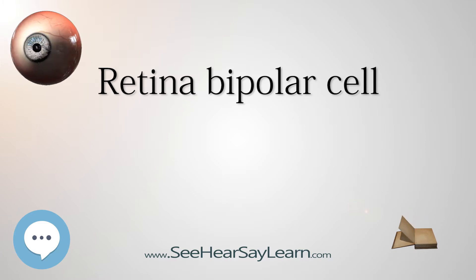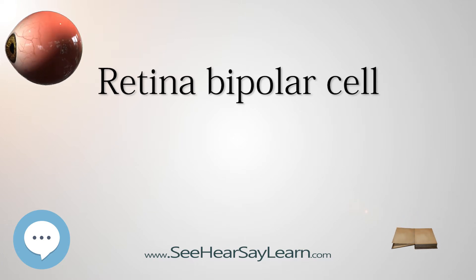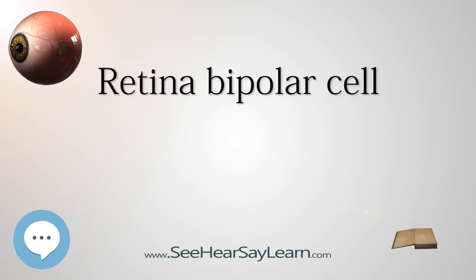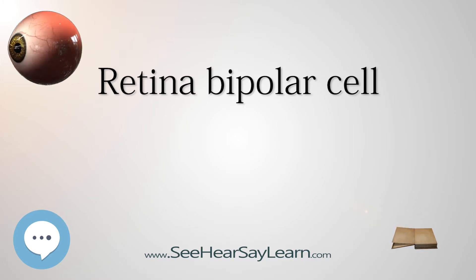Structure. Bipolar cells are so named as they have a central body from which two sets of processes arise. They can synapse with either rods or cones — rod/cone mixed input bipolar cells have been found in teleost fish but not mammals — and they also accept synapses from horizontal cells.